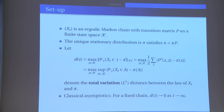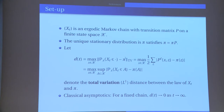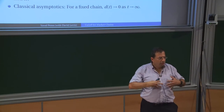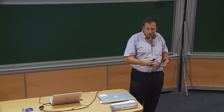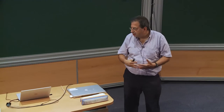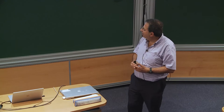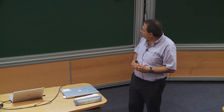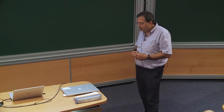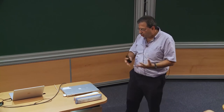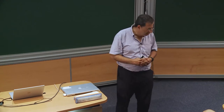We know in the setting of irreducible aperiodic chains that this tends to zero, and the goal is to quantify at what rate it tends to zero. The classical point of view was: fix a chain of n states, drive time to infinity, and see how fast this goes to zero — really determined by the top non-trivial eigenvalue. But the modern point of view, initiated by Aldous and Diaconis and closely related to statistical physics, is different.